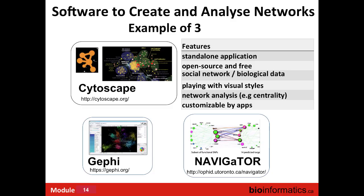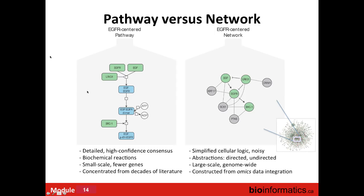To create networks we need software. In this workshop we use Cytoscape, a standalone open-source and free application that can handle any type of network. We can play with visual styles, move elements around, perform network analysis like clustering, and use many additional apps. Other software options include Gephi, which also handles any network type, and Navigator, which is more focused on biological data.